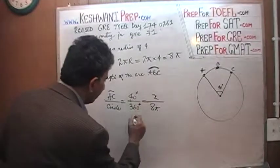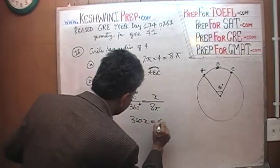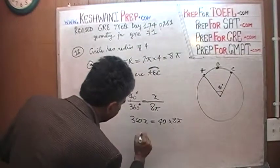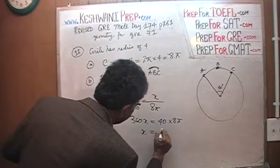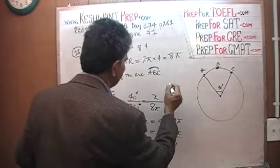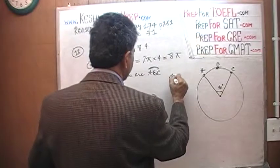So you cross multiply and you end up with 360 times x equals 40 times 8π. Divide both sides by 360 and you end up with x equals 40 times 8π over 360.